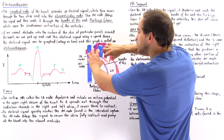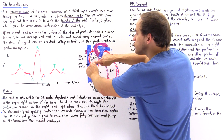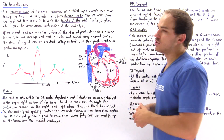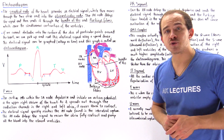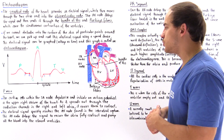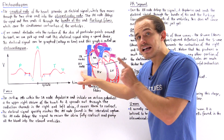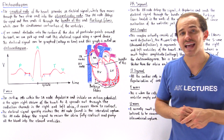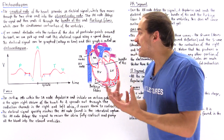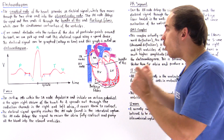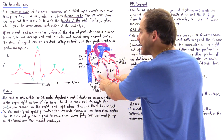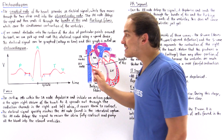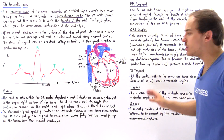At the same time the two atria begin to contract, the signal eventually reaches another specialized section: the AV node, or atrioventricular node, located in the interatrial septum separating the two atria. The AV node delays the signal by about 0.12 of a second, giving the atria enough time to fully contract and move all that blood into the fully relaxed ventricles. Along our P wave, the atria begin contracting at the tip while the ventricles are fully relaxed.